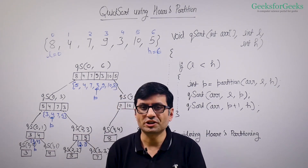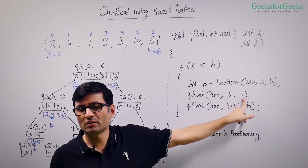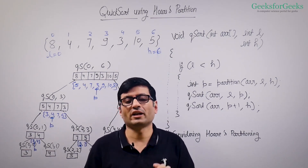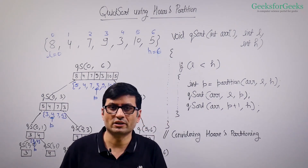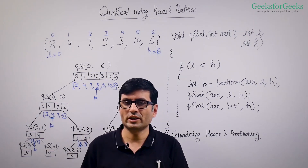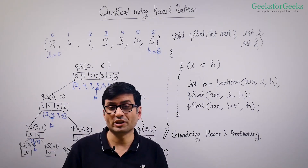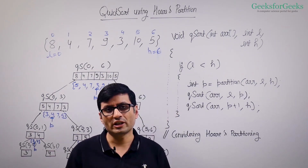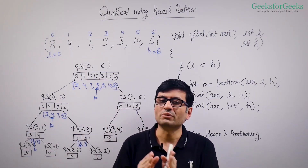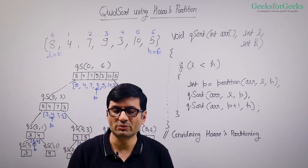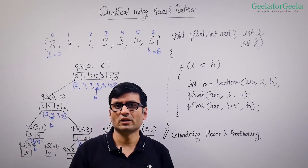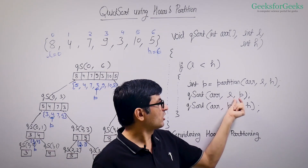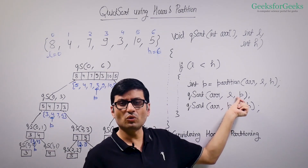When implementing quicksort using Lomuto partition we call quicksort from l to p minus one. This is where Hoare's partition differs: Lomuto partition ensures the pivot is fixed at its correct position, then calls for left half from l to p minus one. But Hoare's partition does not guarantee that — it only ensures elements on the left are smaller than or equal to elements on the right, returning the index of the last element of the left side. It does not fix any element at its correct position, which is why we call quicksort from l to p, not l to p minus one.